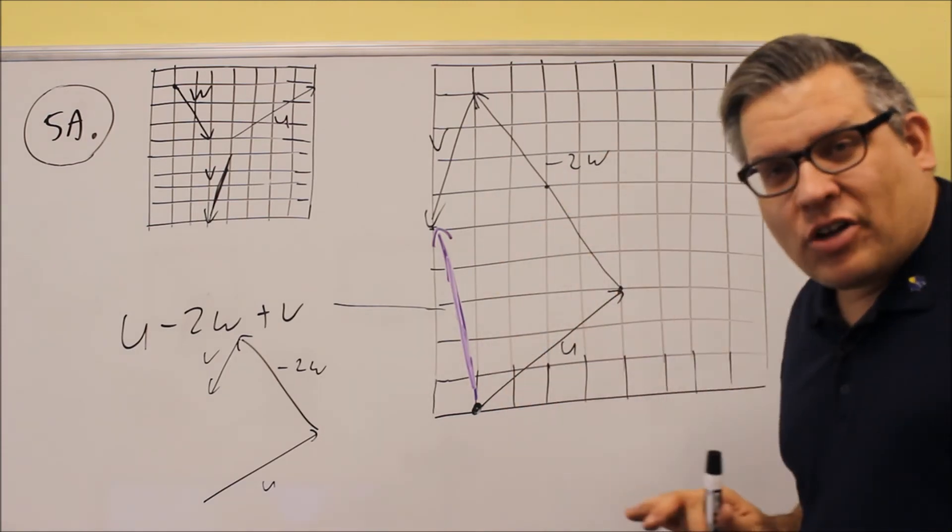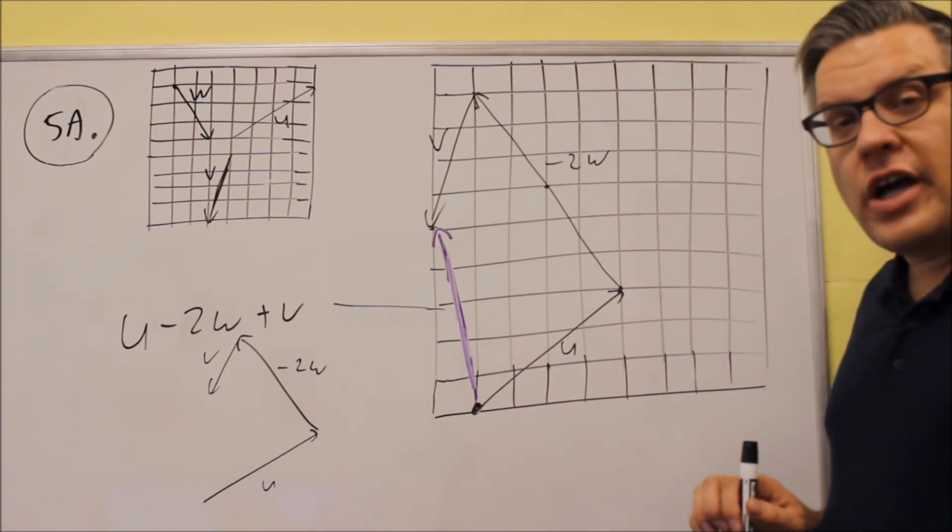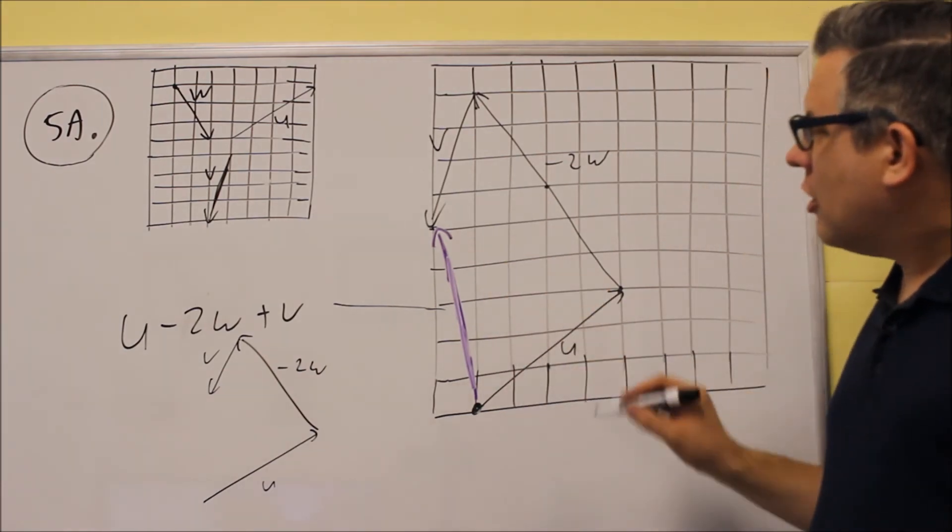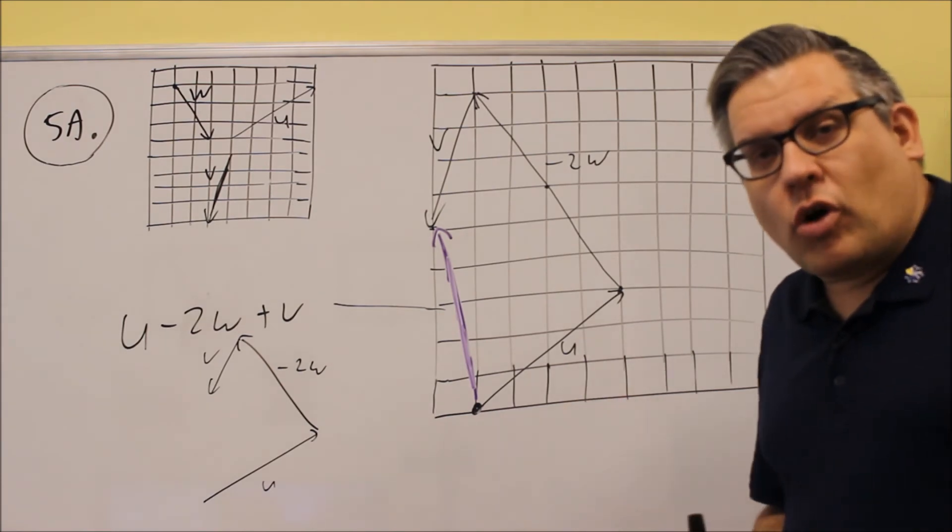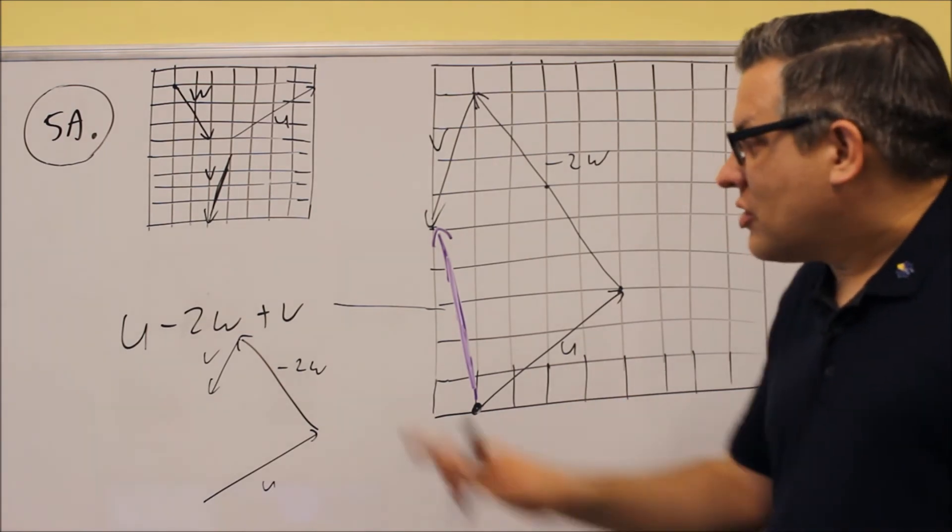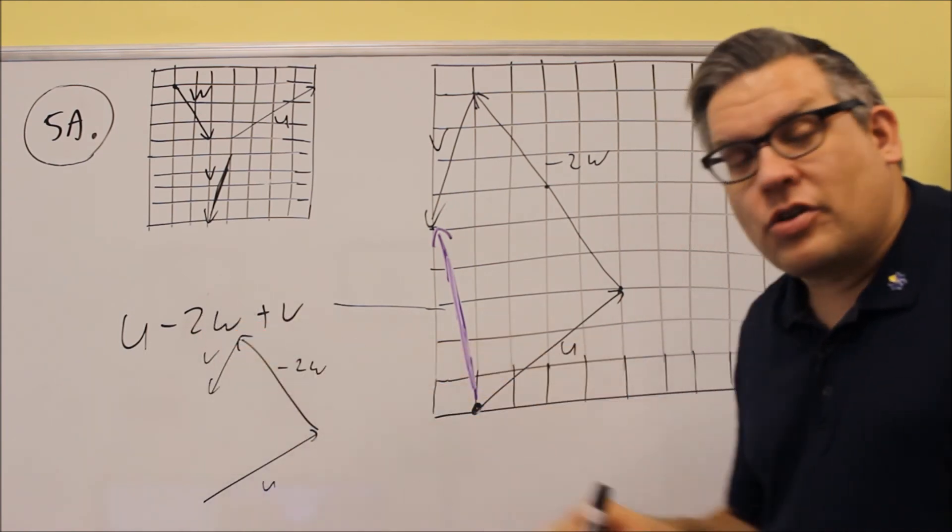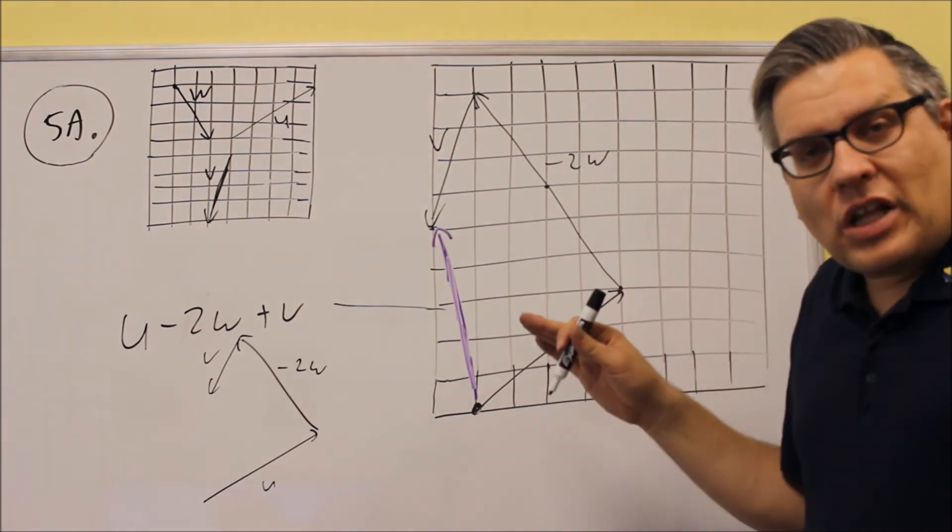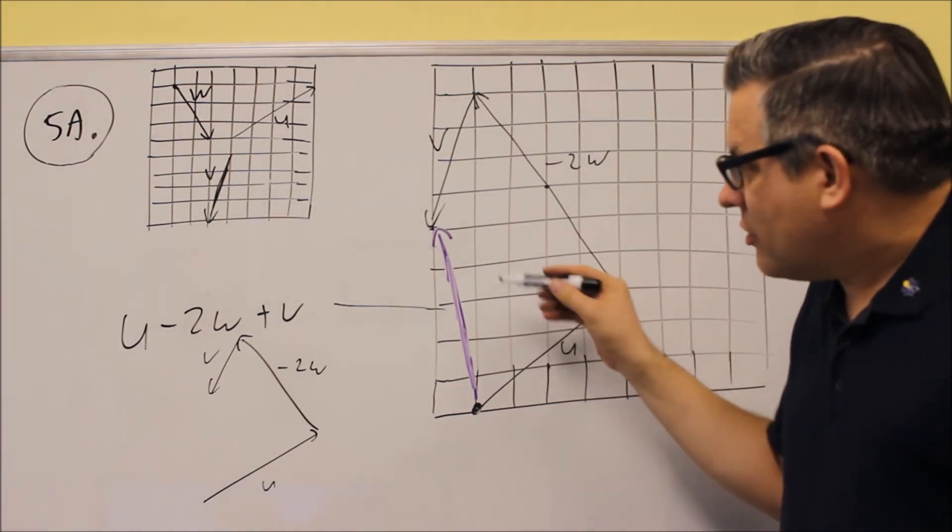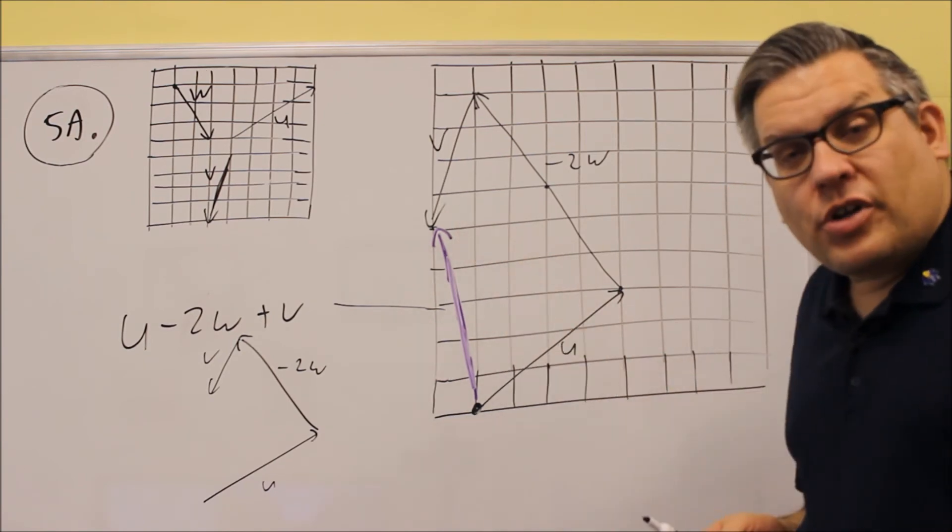So whenever you add vectors, you're always adding them tip to tail. And you can kind of start anywhere down there and go from there. But this would be your final answer. Now, keep in mind that there definitely are more than one way of doing this. You could start anywhere. You don't have to start with U. You could start with V or the negative 2W. It doesn't make a difference.